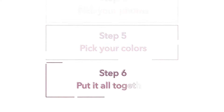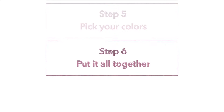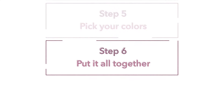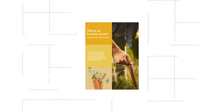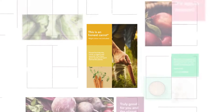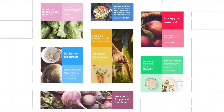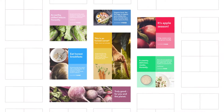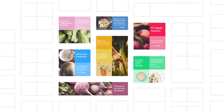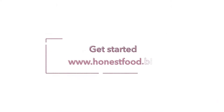And finally, step six: once you've reached this far, you have everything you need to create great communications. It's just a case of putting the elements together in whatever way you need. Interested in joining the campaign? Visit honestfood.bio to get started.